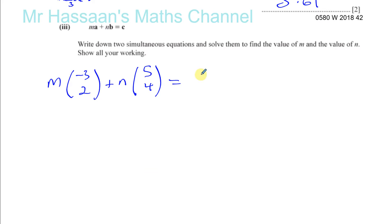So we can form a pair of simultaneous equations by basically multiplying by m and n and then equating the horizontal component and equating the vertical component. The top numbers represent the horizontal component. So we can say minus 3 times m plus 5 times n is equal to 14. That's taking the horizontal component. Then you've got the vertical component, which is the bottom row. We've got 2 times m plus 4 times n is equal to 9.